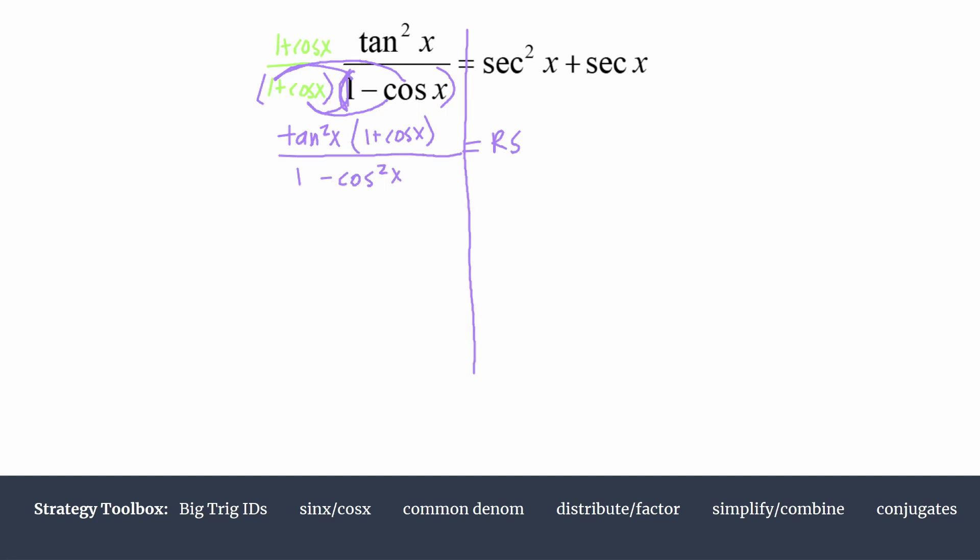The point of using a conjugate is so that you can make a substitution in the denominator, usually using a Pythagorean identity. Looking at this 1 minus cosine squared, we should recognize that's part of a rearranged Pythagorean identity. We know cosine squared plus sine squared equals 1.